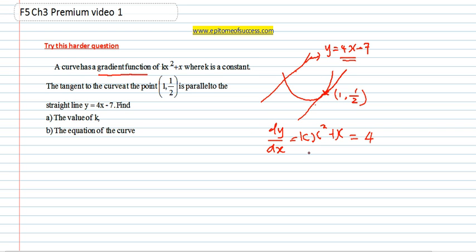So now it says find the value of k. So you have kx squared plus x equals to 4. So what is the value of x then? See the x coordinate here? That's where the straight line, the tangent, passes as well. So you can just substitute 1 inside. So k, that's 1 squared plus 1 equals to 4. So that's k is equals to 3. That's it. Simple. That's for you to answer question A.